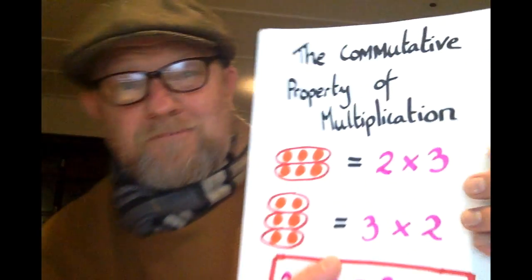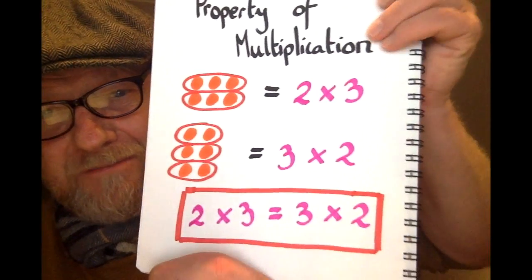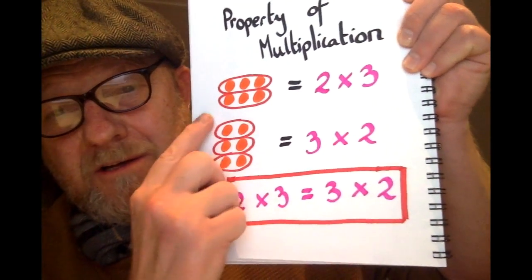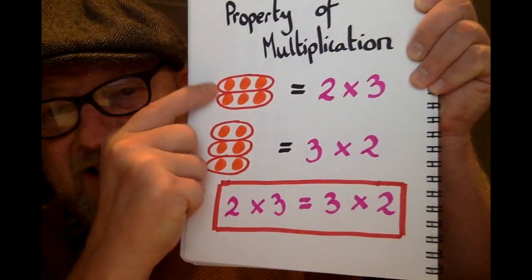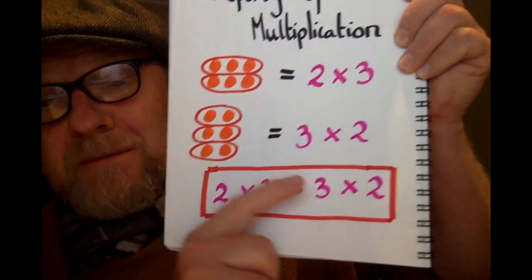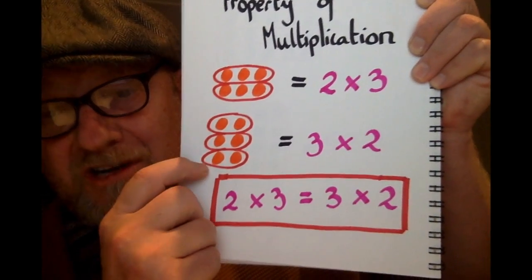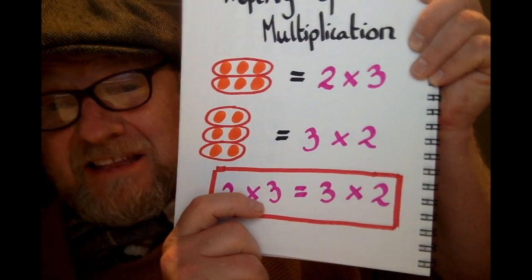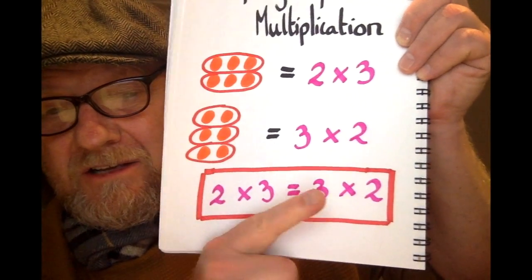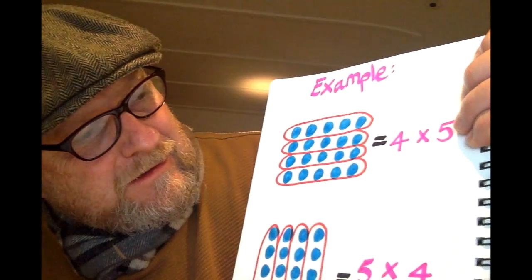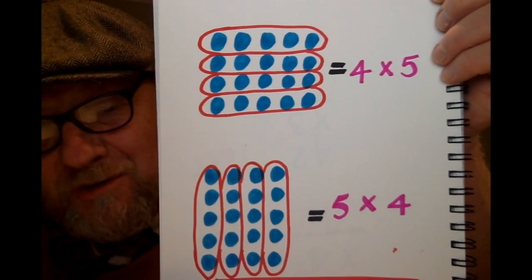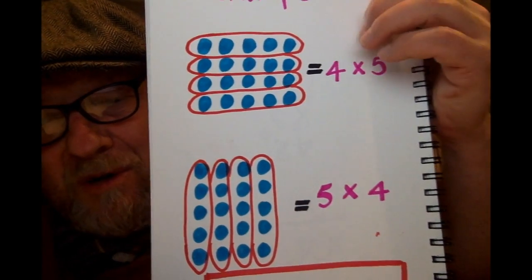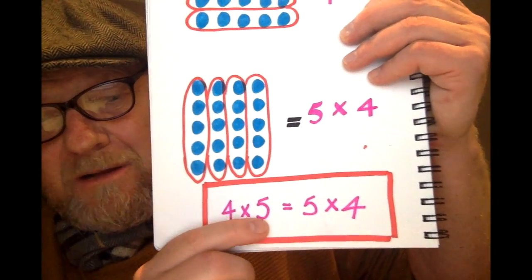Here's an example of the commutative property of multiplication. I have 2 times 3, which is 2 groups of 3, and I've represented them as coloured dots. So that's what I would like you to do in this exercise — represent them as arrays. 2 times 3 equals 3 times 2. Another example: we have 4 groups of 5, which is the same as 5 groups of 4. That's the commutative property at work — 4 times 5 is the same as 5 times 4.